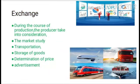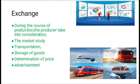During production, the producer has to take consideration of many things like market study, transportation, storage of goods, determination of price and advertisement. Look at the picture where they are looking at charts showing how much their product is sold, which market their product is sold more, and which market it is not sold — they have to study the market. For transport, they must decide which method to use to transport goods to various areas — whether airways, railways, roadways or waterways — and whether they are supplying to the international market or the local market.